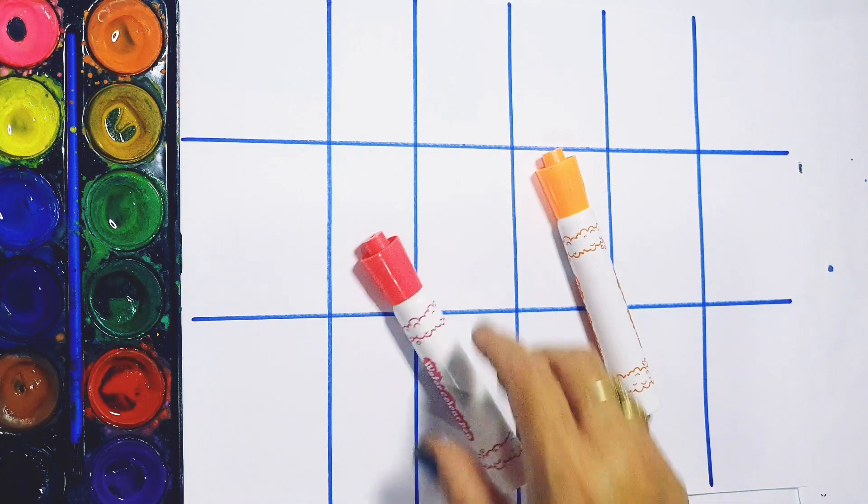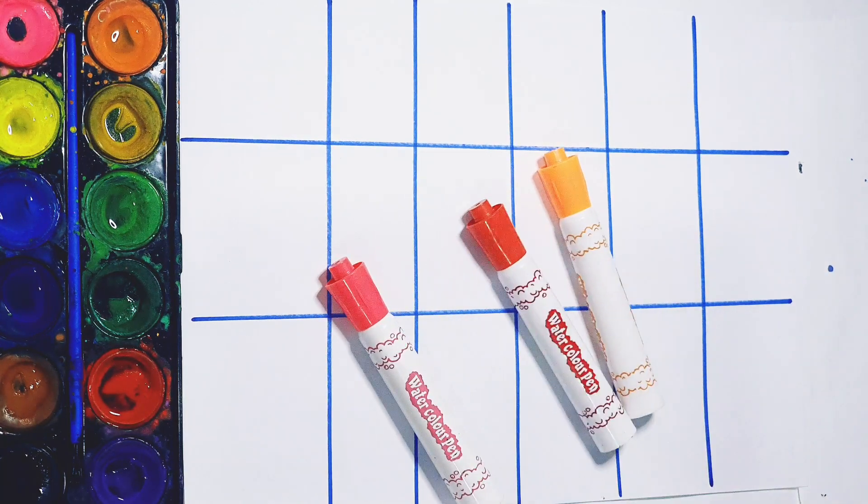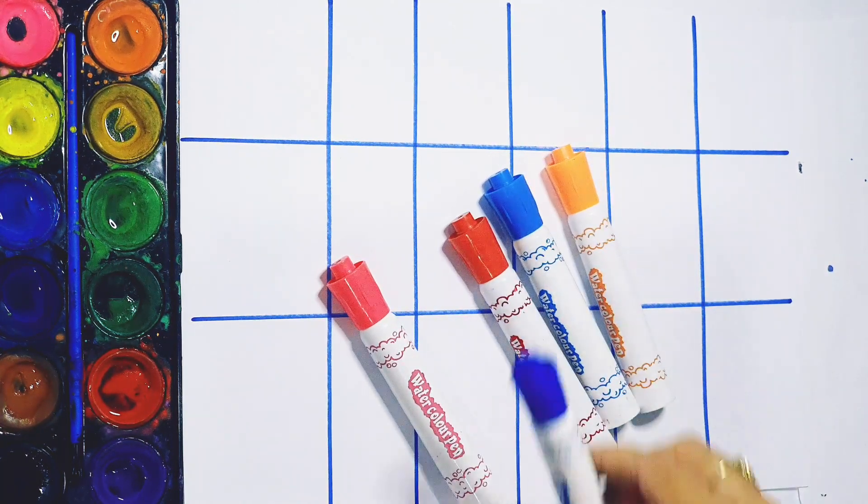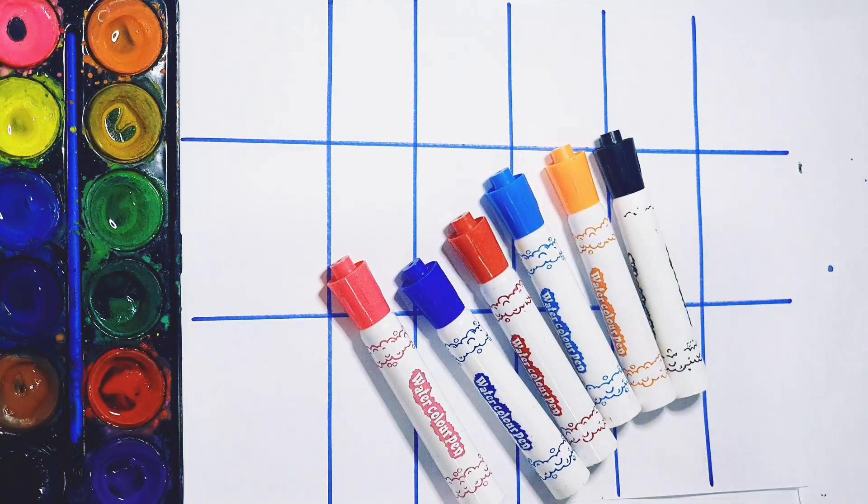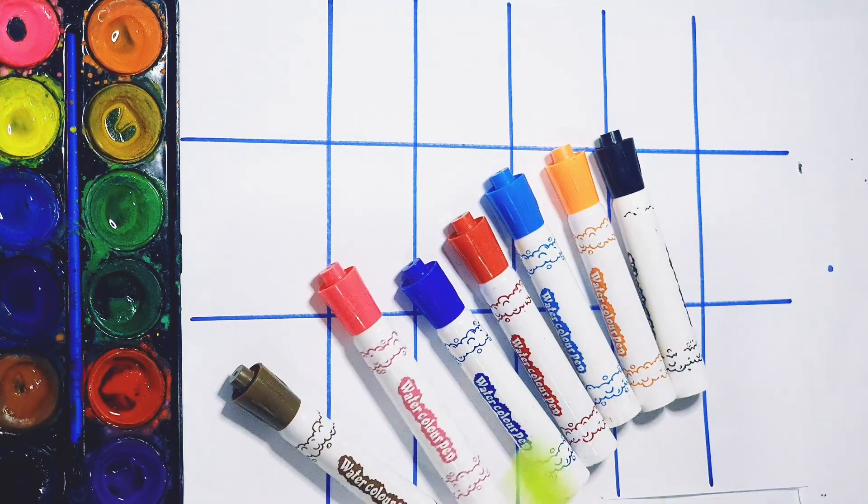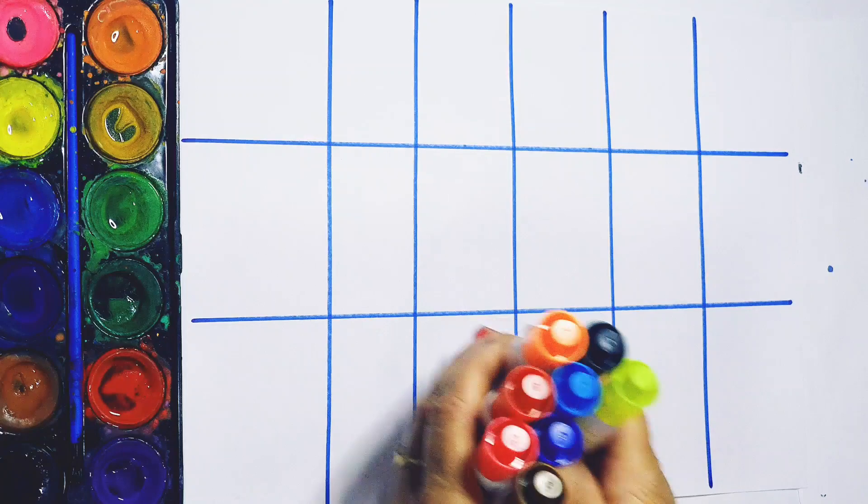Hello kids, welcome to my channel. So today we are going to learn 1, 2, 3 countings and colors: orange color, pink color, red color, light blue color, dark blue color, black color, brown color, and light yellow color. Let's start.